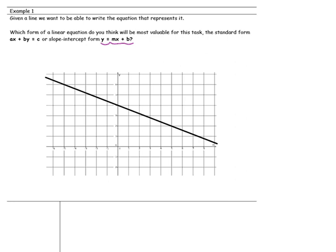The reason is that you can see the slope in the equation and you can see the y-intercept. Also, in the graph, you can see the slope by calculating the rise over the run, and you can see the y-intercept. So, the form that will make it easiest to write the equation will be the slope-intercept form. That's what we'll be using.